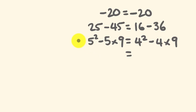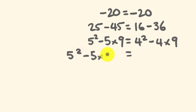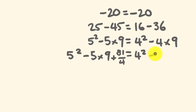The next thing I'm going to do is add 81 over 4 to both sides. So this side of the equation becomes 5 squared minus 5 times 9 plus 81 over 4, and this side — kept balanced — becomes 4 squared minus 4 times 9 plus 81 over 4.